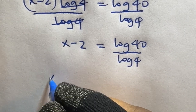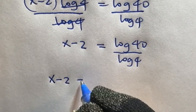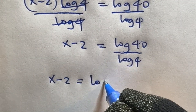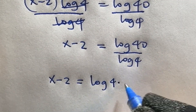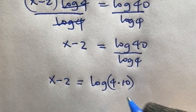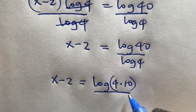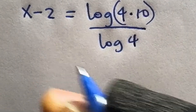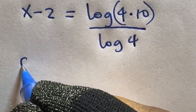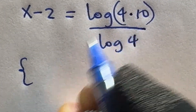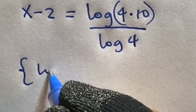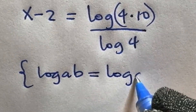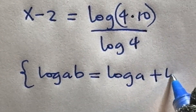x minus 2 is equal to — I can break down 40 into 4 times 10, so I have log of 4 times 10 divided by log 4. By the logarithm rule, I can break apart this product: log(a times b) is log a plus log b.